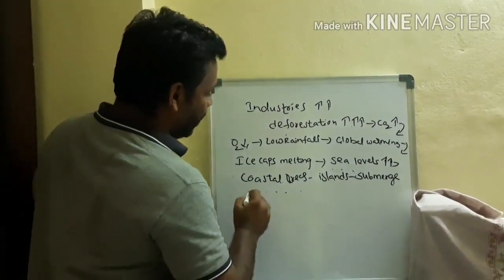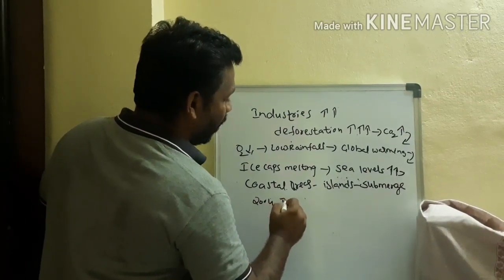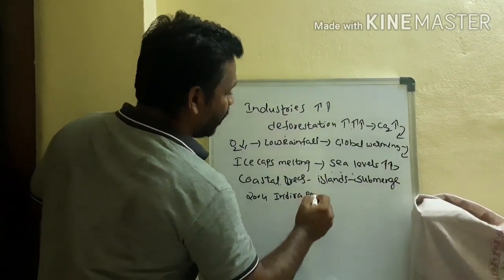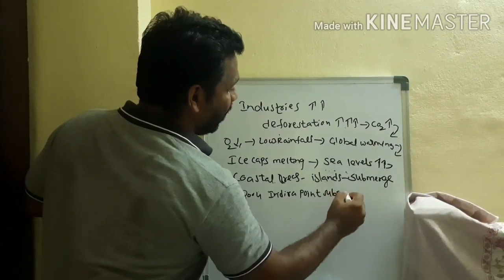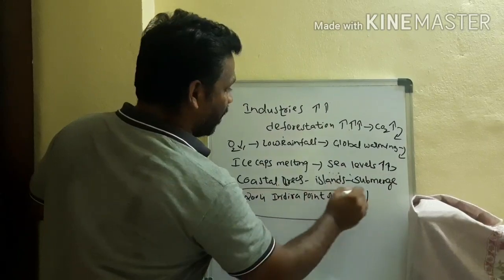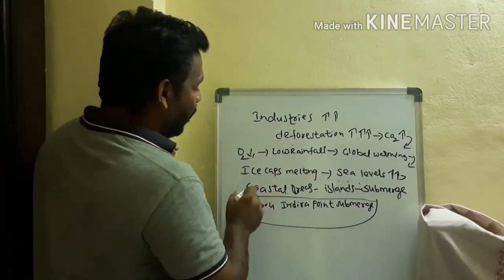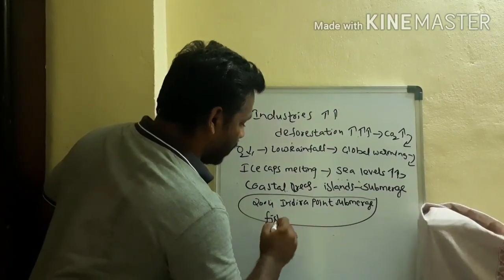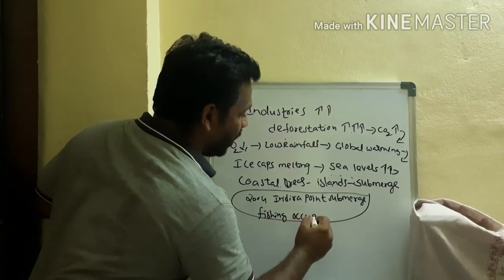For example, we have discussed in the previous class: in 2004, the Indira Point was submerged in water. Like this, areas may be submerging. Their life will be very difficult — those who depend upon the seas and oceans for fishing purposes. Their occupation will be difficult.